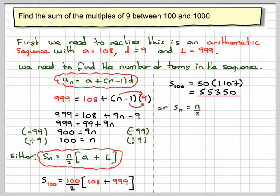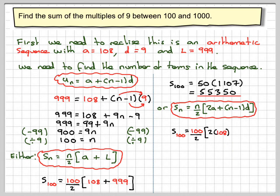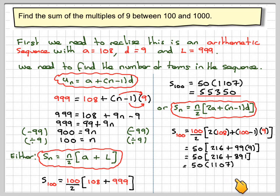Or you can use the other sum formula, but the arithmetic is a little bit more difficult here. So s of 100 is 100 over 2, 2 times the first term, so 2 times 108, plus 100 minus 1 times the common difference. So that's going to be 50, 100 divided by 2, 2 times 108 is 216, and then we're going to do 99 times 9. So 50, 216, 99 times 9 is 891. So that's going to be 50 times 1,107.